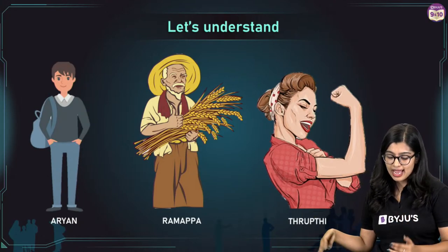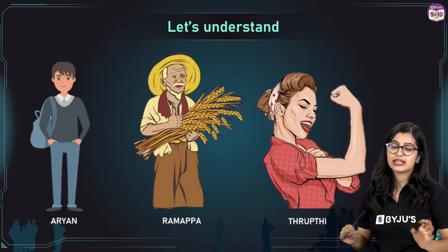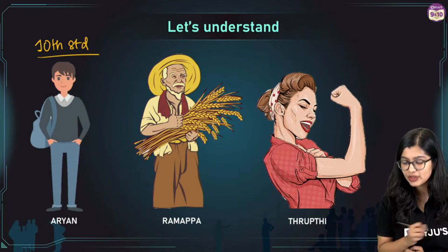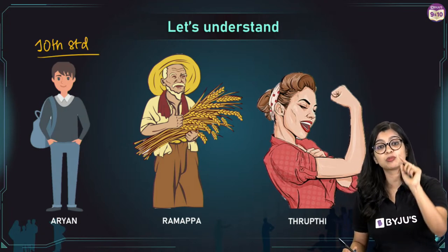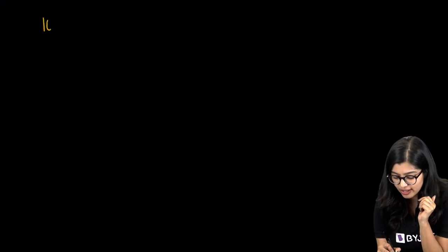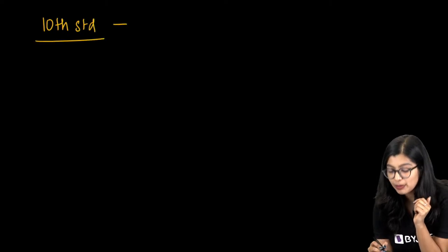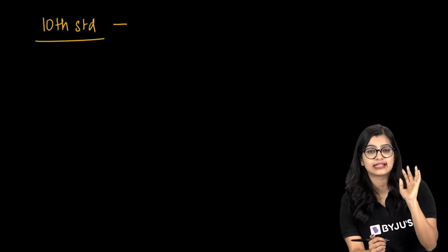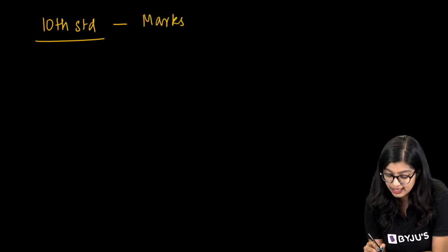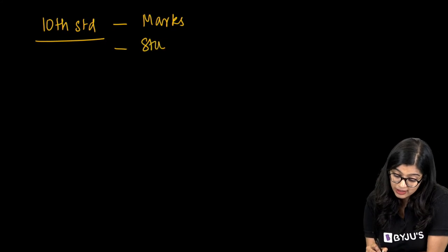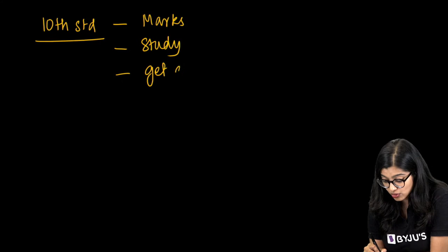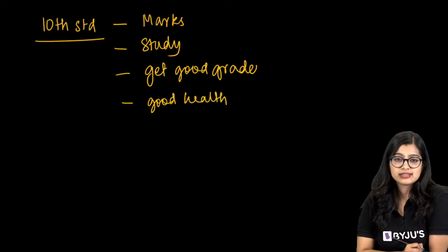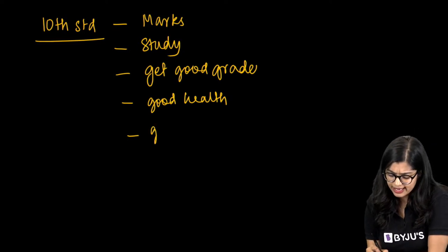Now let's meet three people: Aryan, who is in 10th standard; Ramappa, a farmer; and Thrupti, an enthusiastic working professional. If I ask Aryan what progress means to him, he might say: score well in exams, get good grades, have good health, be creative, get money, and get a job. Many of you have many goals you want to reach in order to progress and become better.